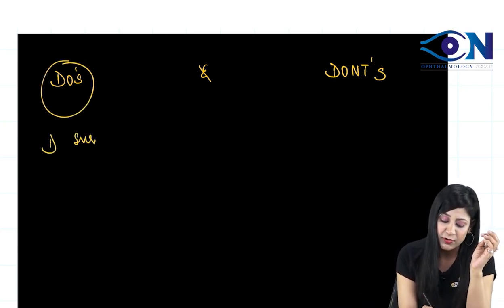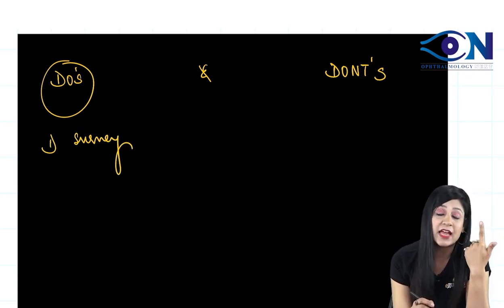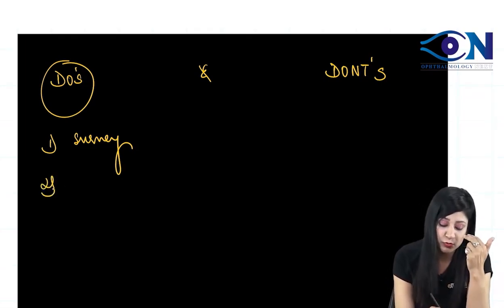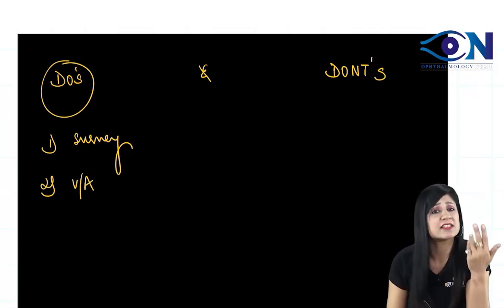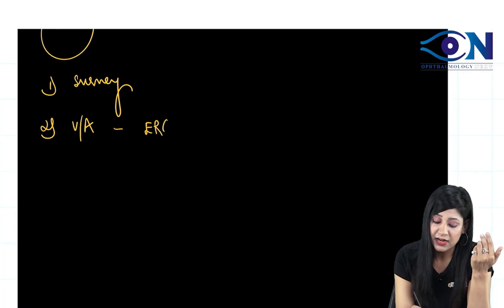Number one, you have to do the survey of the patient, what have been the sites, what have been the signs and symptoms that you are able to see. So local survey you have to do, you have to see the visual acuity of the patient as accurately as you can. That is done with the help of the ERG.